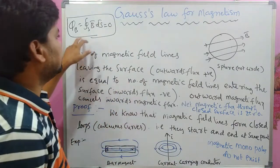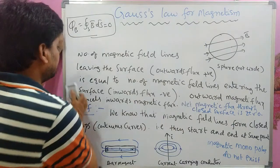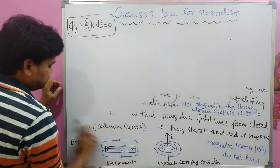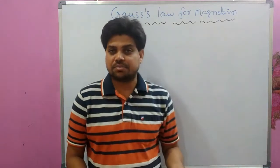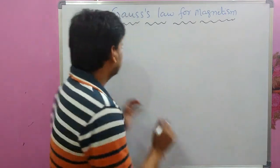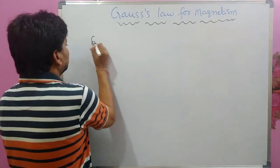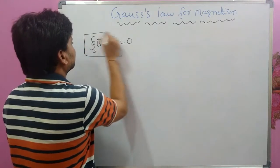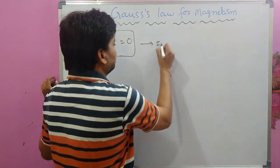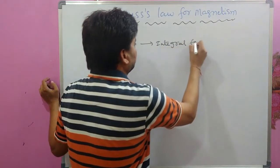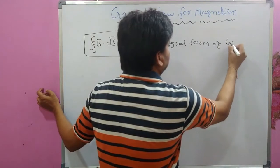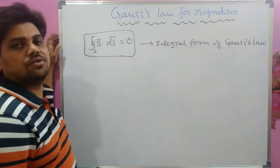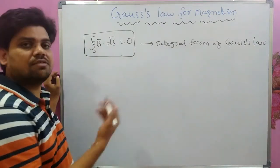With this integral equation we can now derive the differential form of Gauss's Law for Magnetism. The equation ∮_S B⃗ · dS⃗ = 0 is the integral form of Gauss's Law for Magnetism.